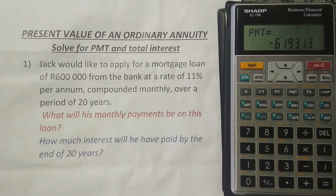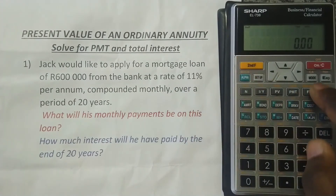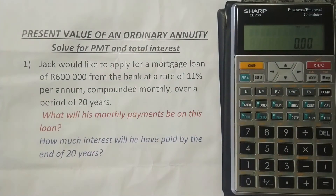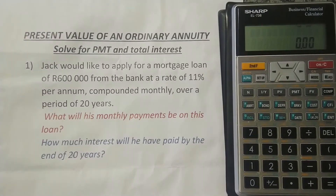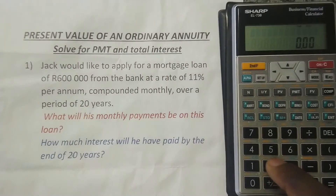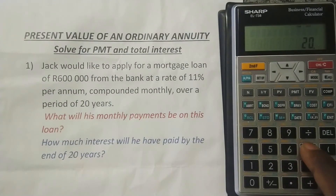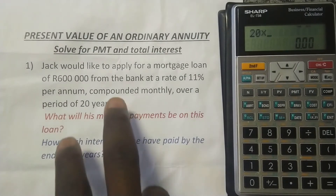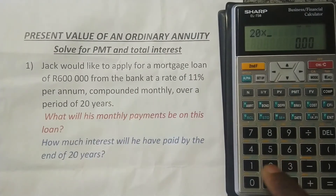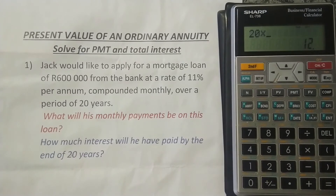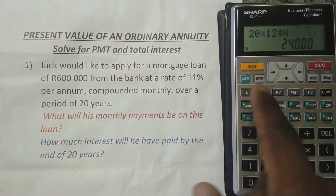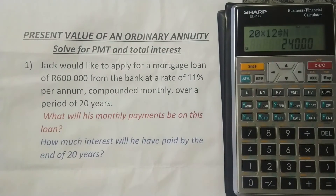We haven't answered the second question yet, but before we do that, I want to show you another way of doing it. So let me clear my memory again — always do that: second function, mode, clear all. Now I'm going to show you how to do it manually, where you don't have to tell the calculator how many compoundings per year. The loan is for 20 years, so I press 20 and then multiply by 12 — the number of compoundings per year since it's compounded monthly — then press N. It gives us 240, just like before.